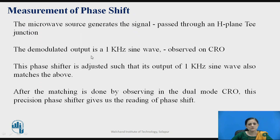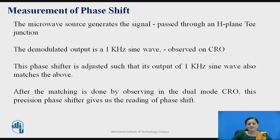The microwave source generates the signal which is passed towards the H-plane T junction, and the demodulated output is a 1 kilohertz sine wave which can be observed on CRO. This phase shifter is adjusted such that its output 1 kilohertz sine wave also matches with the above signal. After matching is done by observing in dual mode CRO, this phase shifter gives us the reading of phase shift. By comparing the previous wave and the current wave, the phase shift between them can be observed and measured.